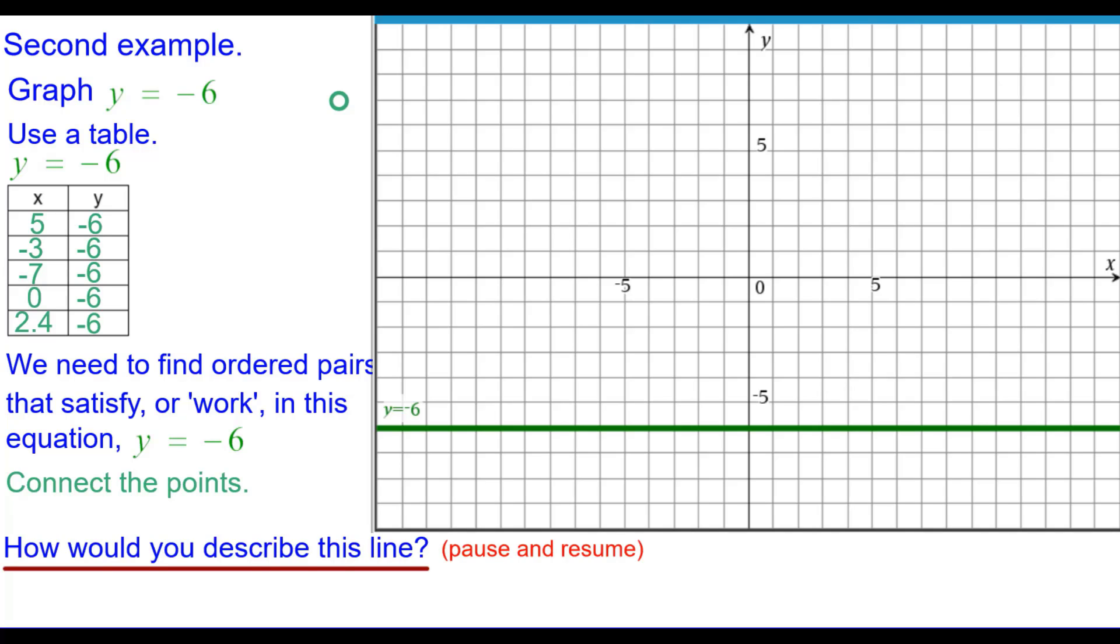Again, how would you describe this line? Pause and resume when you're ready. It is a horizontal line. It moves along the horizon and it is a line that has a slope of 0.